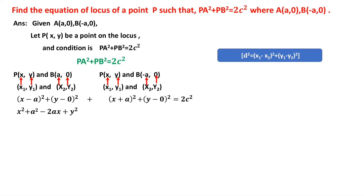Now expand (x + a)² in the form of (a + b)² = a² + b² + 2ab, giving x² + a² + 2ax + y² = 2c². Adding terms: x² + x² = 2x², a² + a² = 2a², -2ax + 2ax = 0, and y² + y² = 2y². So 2x² + 2a² + 2y² = 2c².